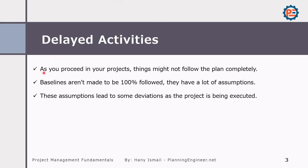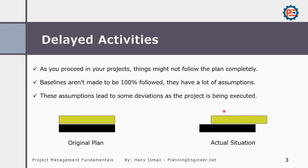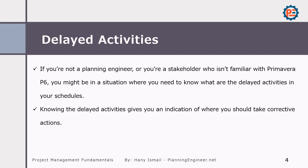Delayed activities. As you proceed in your project, things might not follow the plan completely. The baseline is not expected to be followed 100%. There are a lot of changes and assumptions that we have made, and that's why some deviation to the project might happen. This is our original plan and this is the actual progress. This situation rarely happens on site — that you start exactly the same date as planned and finish the same date as planned. The actual could be deviated from the plan. That's why it is important to find the delayed activities.